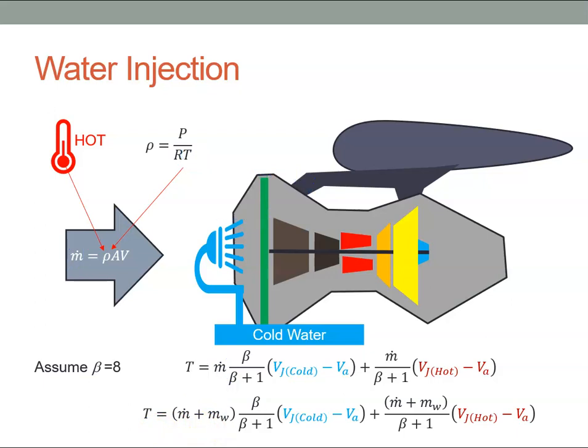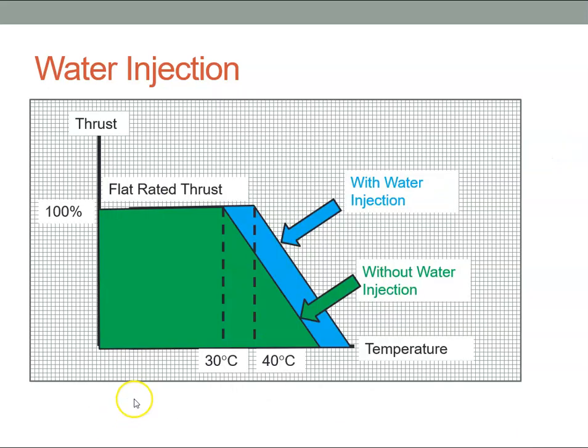If we look at that on the graph, you can see that the engine was flat rated to, let's say, 80 kilonewtons. So we were guaranteed 100% of that thrust up to 30 degrees celsius. But when the temperature got warmer—say up here to 40 degrees celsius—we were only going to get maybe 80% of that thrust.